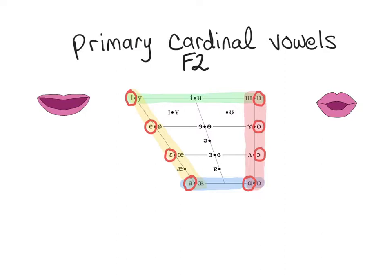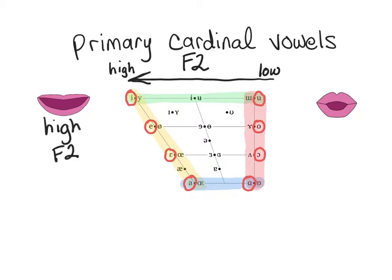As we know from our discussion of the acoustic properties of vowels, F2 increases from back to front, so that front vowels have a high F2 and back vowels have a low F2. Similarly, the configuration of the lips also has an effect on F2. When the lips are spread, this causes the overall vocal tract length to shorten, which causes all formants to raise — this is particularly prominent on F2. Conversely, when the lips are rounded, this elongates the overall vocal tract length, which causes all the formants to lower.